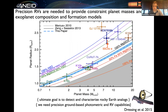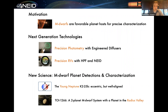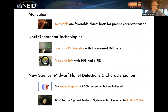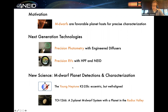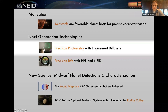That concludes the motivation part of my talk, where hopefully I've motivated that M dwarfs are particularly exciting planet hosts to study and characterize. This is an overview of the next parts of the talk. I wanted to discuss our two-pronged approach: technology development to achieve precision photometry from the ground with new technology called engineered diffusers, and then our work on the HPF and NEID spectrographs, which are the next-generation spectrographs to detect and characterize new terrestrial planets. Then I'm excited to talk about a couple of new papers we've recently been working on.